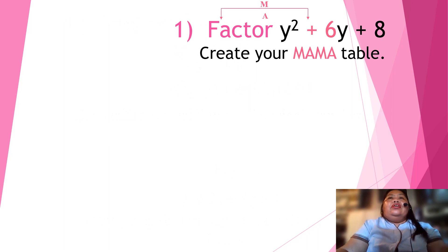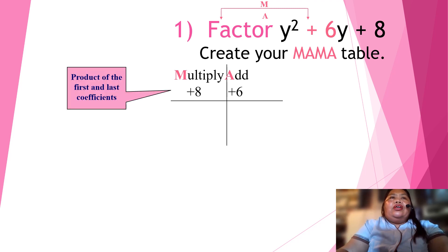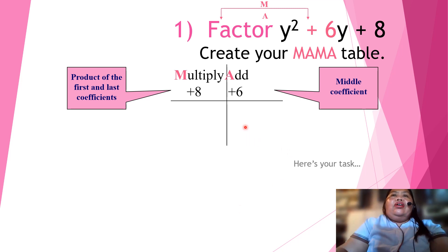Okay. So, let's have another. Factor y squared plus 6y plus 8 and create your MAMA table. So, we have the product of the first and last coefficient, which is positive 8. And then, the middle coefficient, so we have 6.